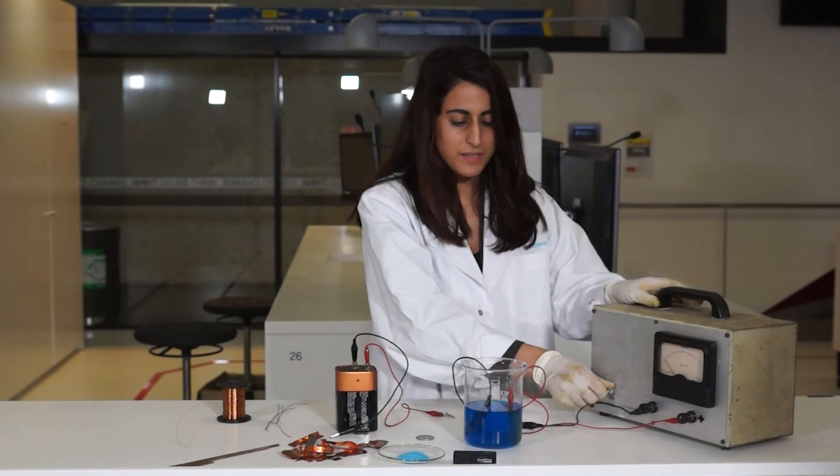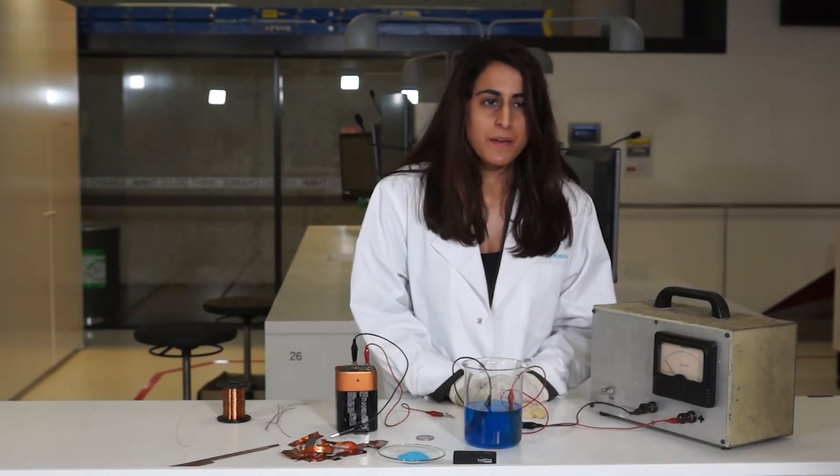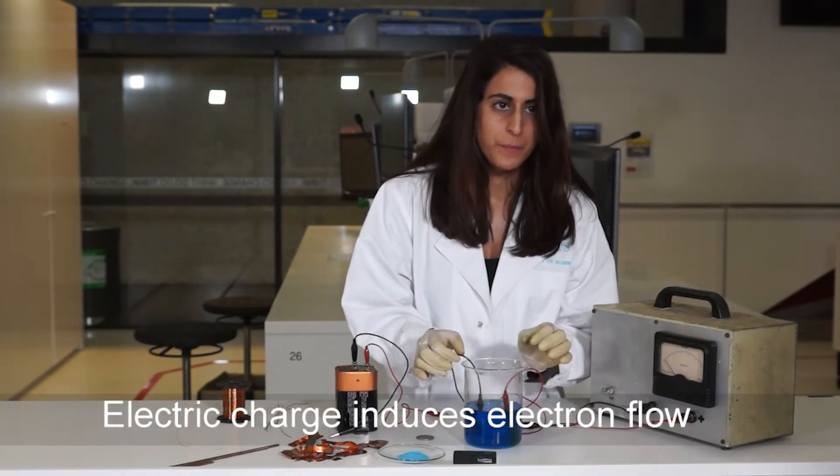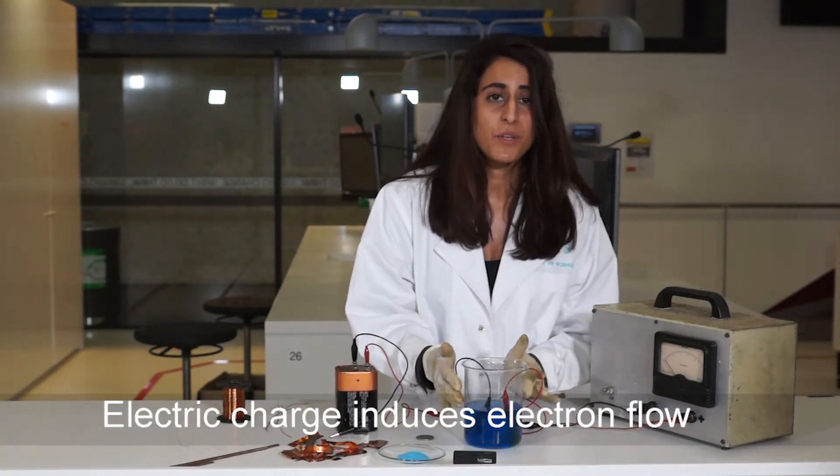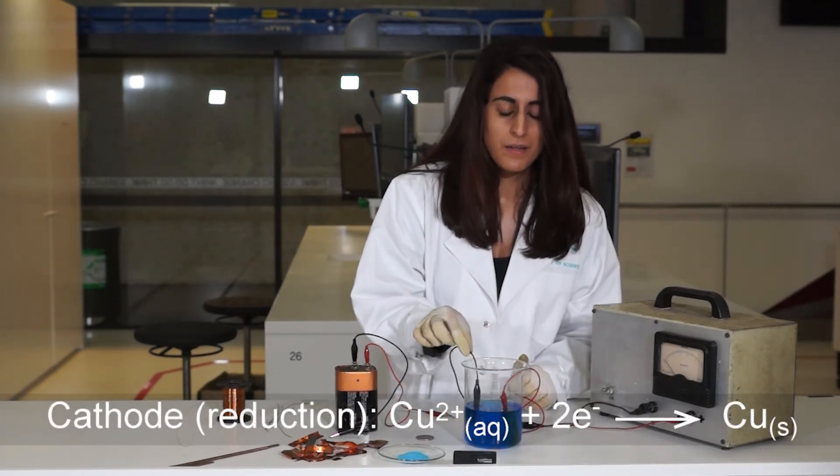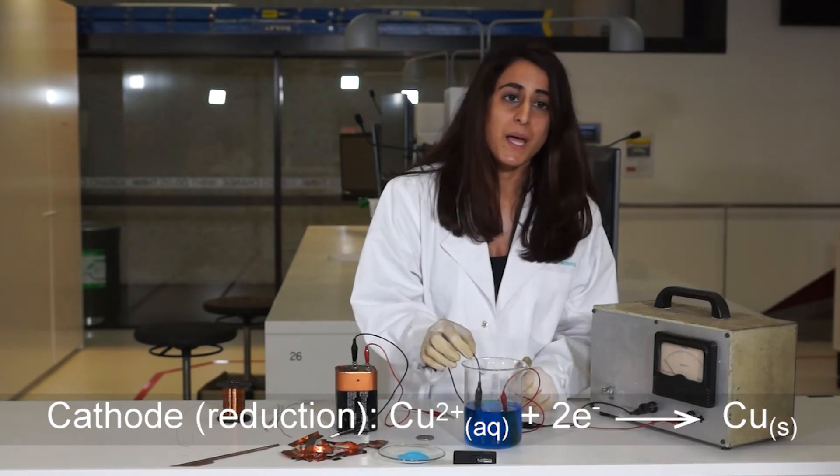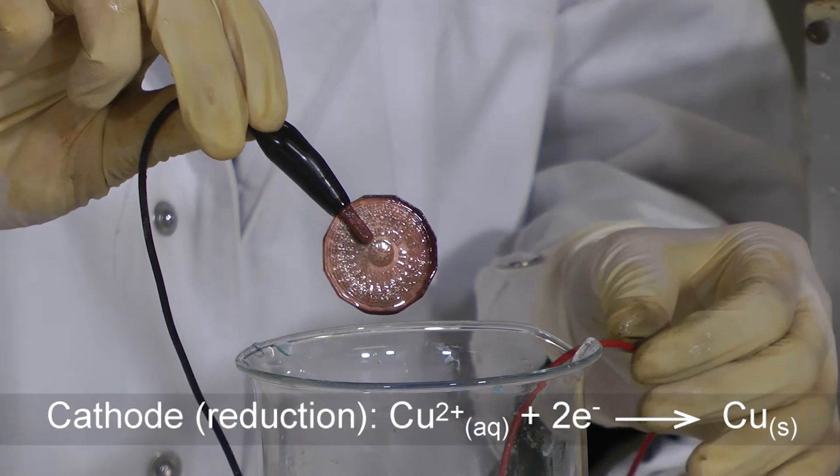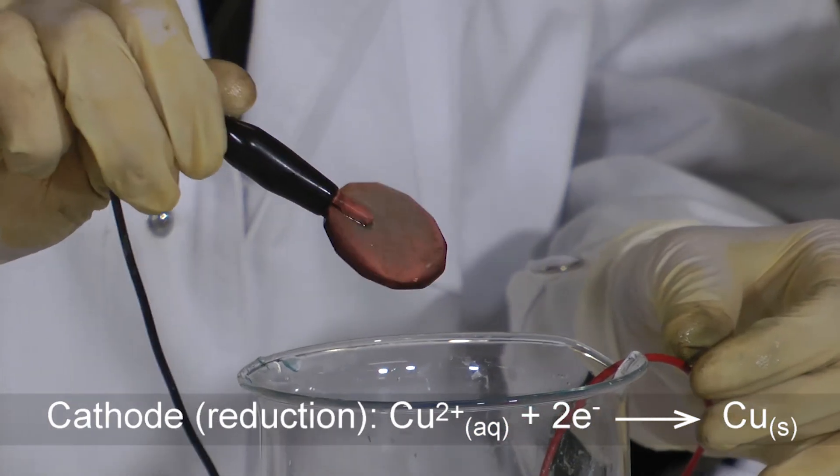I'm turning it on so that our circuit will link it up. And we're going to see the following process: the electrical charge will drive the flow of electrons. Now the positive copper ions in the solution are attracted to the negative cathode. They will accept electrons and become copper metal, and you should be able to see copper metal forming around the coin.